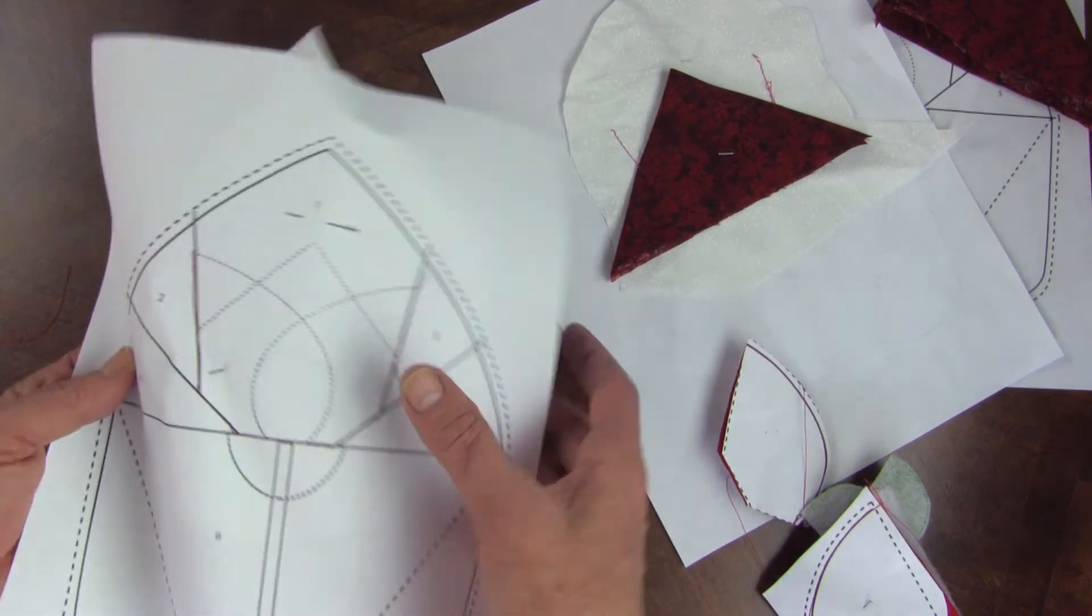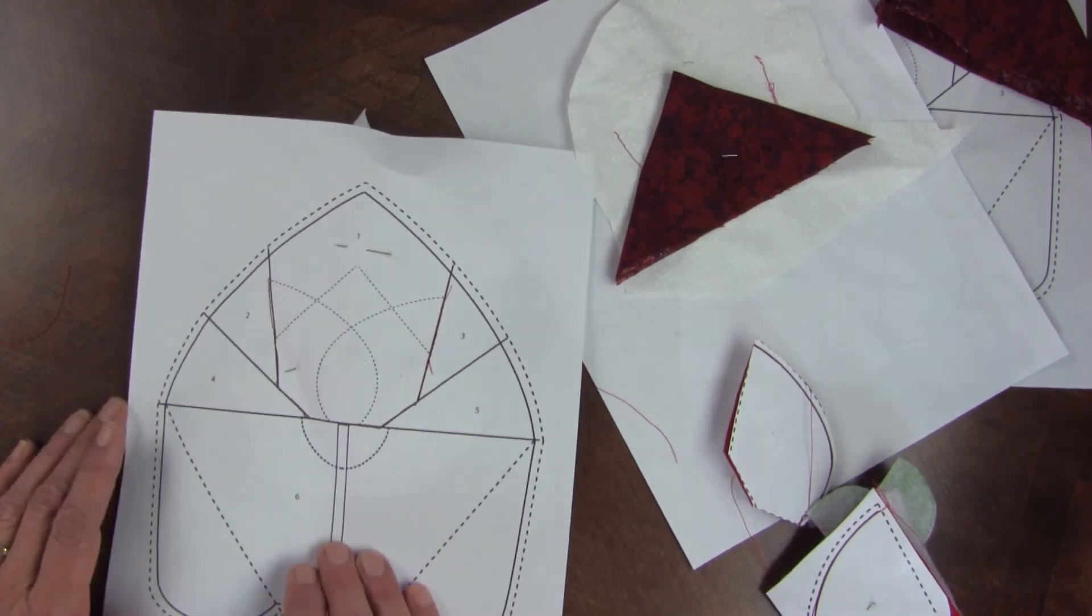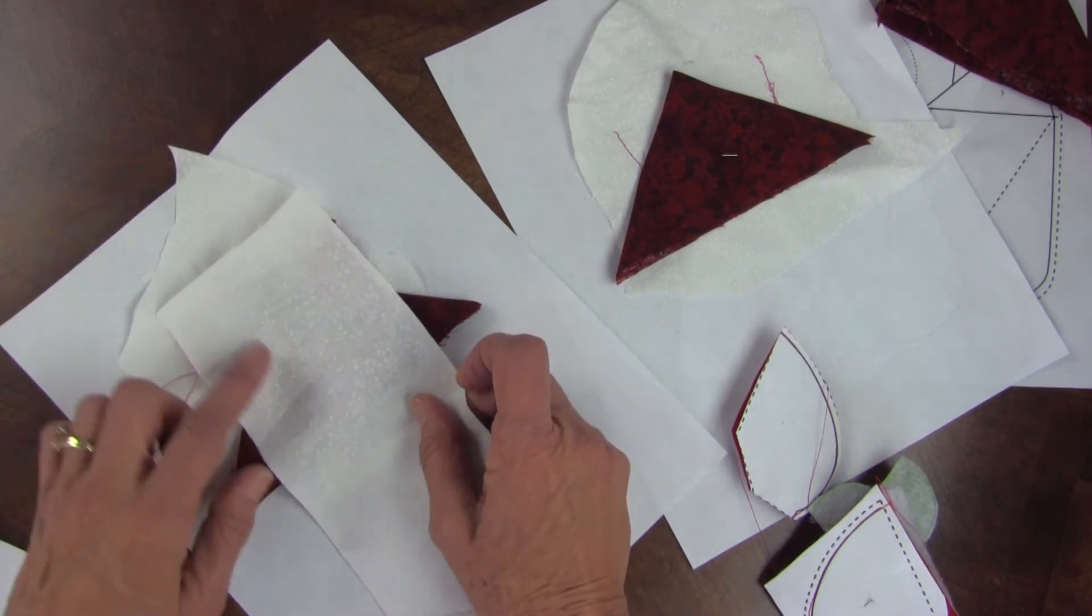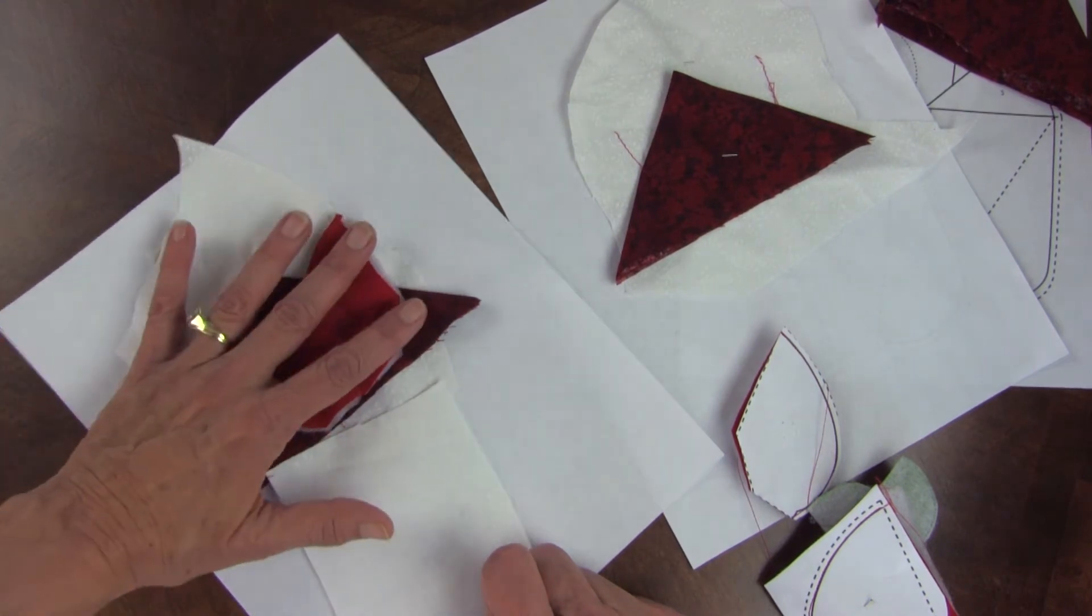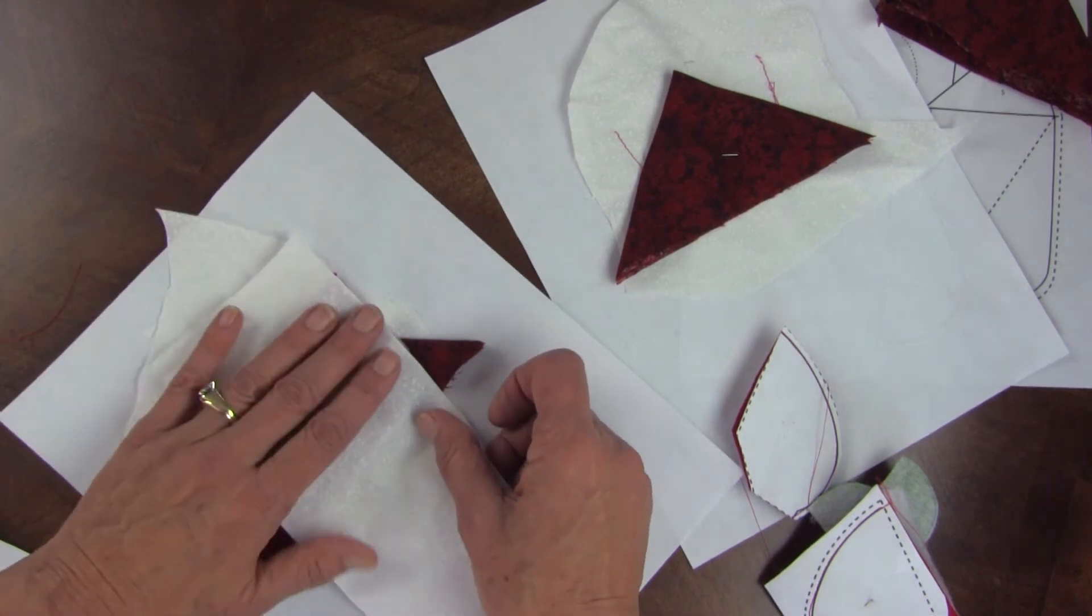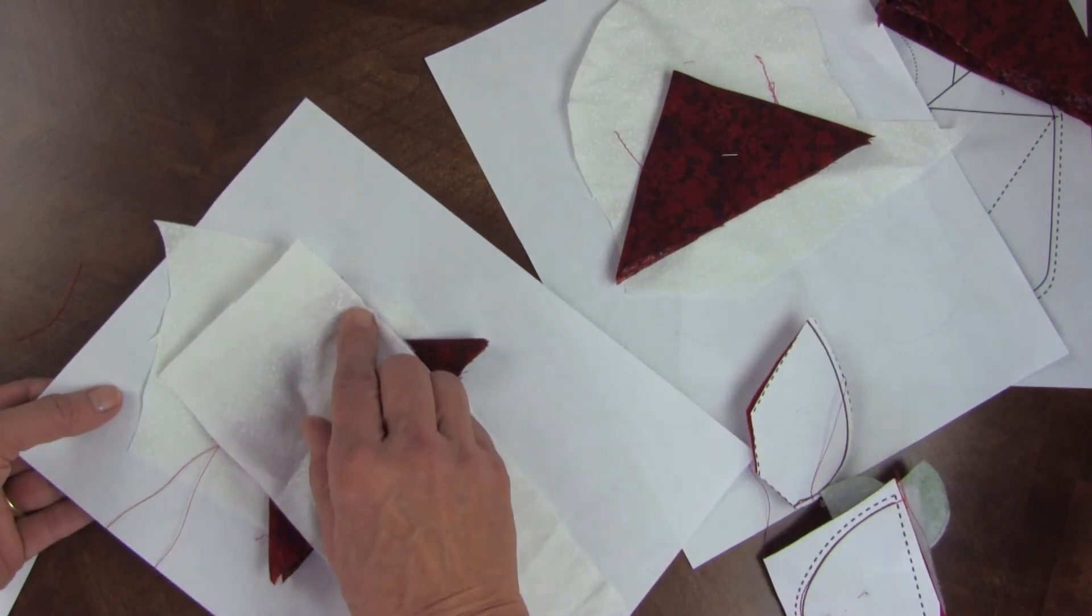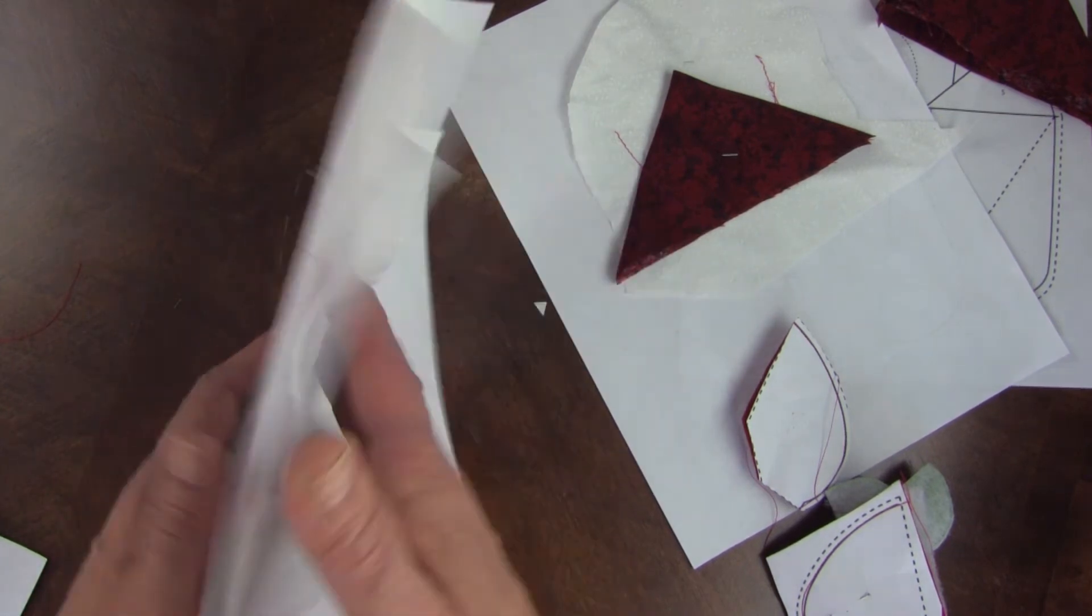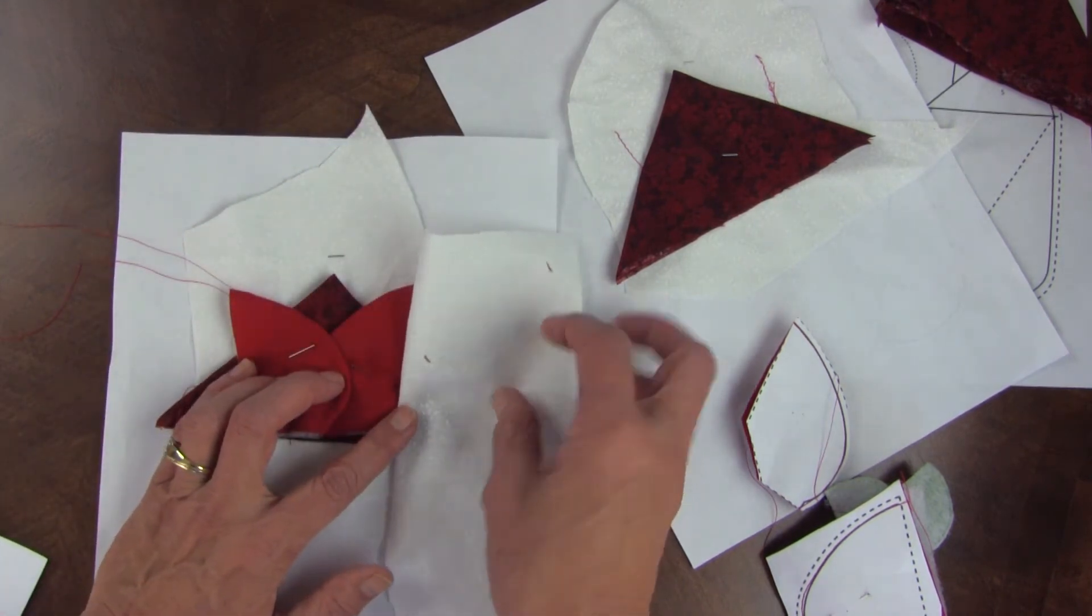Then, I'm going to foundation piece the background pieces two and three. And I take my background fabric and I'm going to place it right side down. Now remember, number one was right side up. Why? Because it doesn't move. It's placed right where it's going to stay. Everything else is going to be placed right side down so the bulk is opposite the area we're going to cover. And it's a quarter of an inch past that basting. And turn it over and sew that whole seam line. Trim the extra out of the seam. And then it folds back and covers area two.